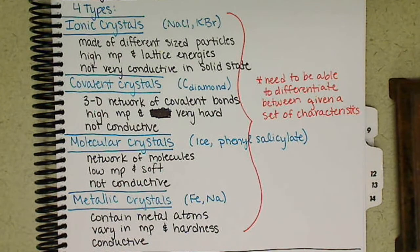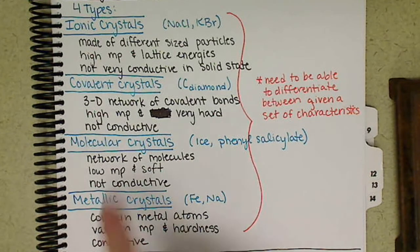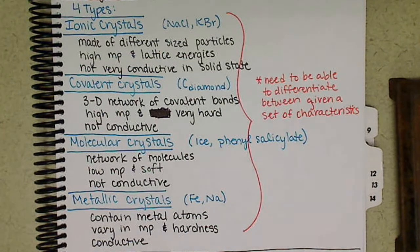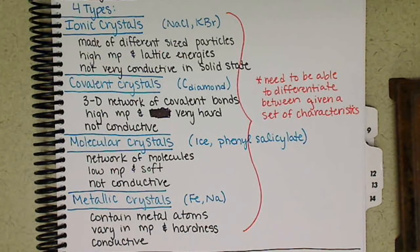You need to be able to, if I give you characteristics of a melting point of 1,000 degrees, not conductive in a solid state, you would need to be able to identify that as an ionic crystal. If I describe something as having a melting point of, say, 400 degrees and is hard and conductive, you would need to say that it's a metallic crystal. There are some good problems in sapling that go through and give some examples of that.